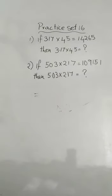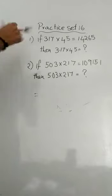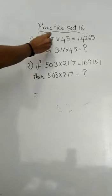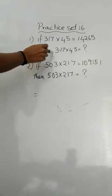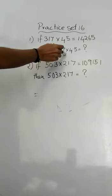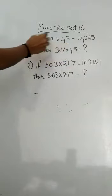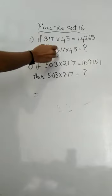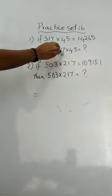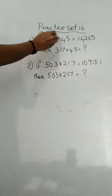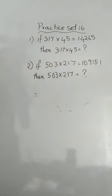We are doing Practice 16 about multiplication. The first question is: if 317 into 45 is a given product, then what is 3.17 into 4.5? The same digits are there — 3.17 has two decimal places and 4.5 has one decimal place. What will be the answer?